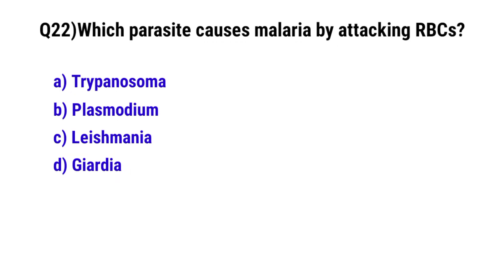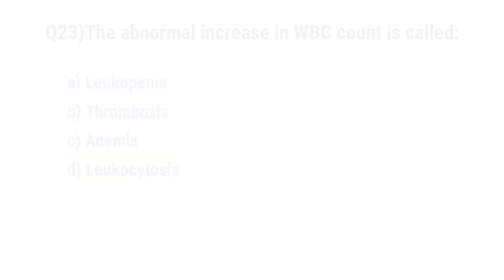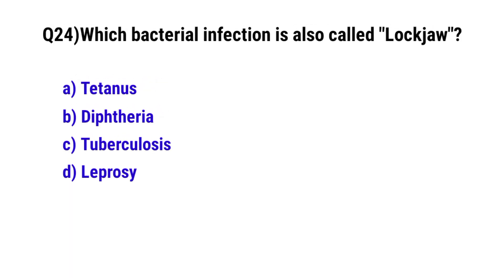Question number 22: Which protozoan causes malaria by attacking RBCs? The correct option is B: Plasmodium. Question number 23: The abnormal increase in white blood cell count is called? The correct option is B: Leukocytosis.